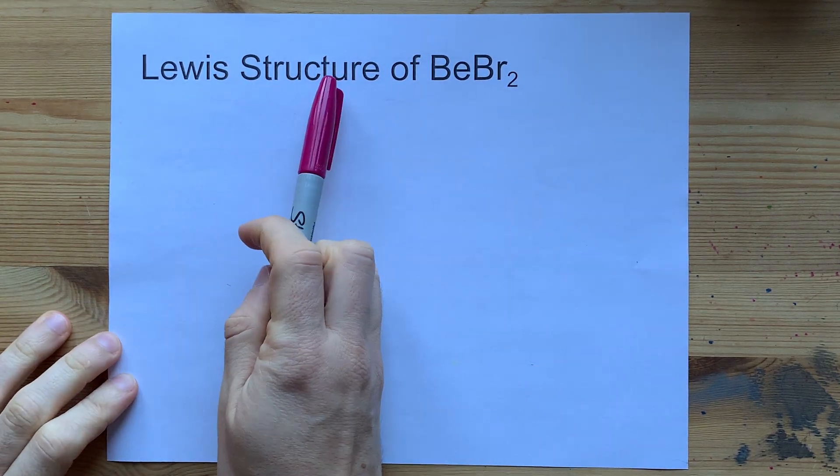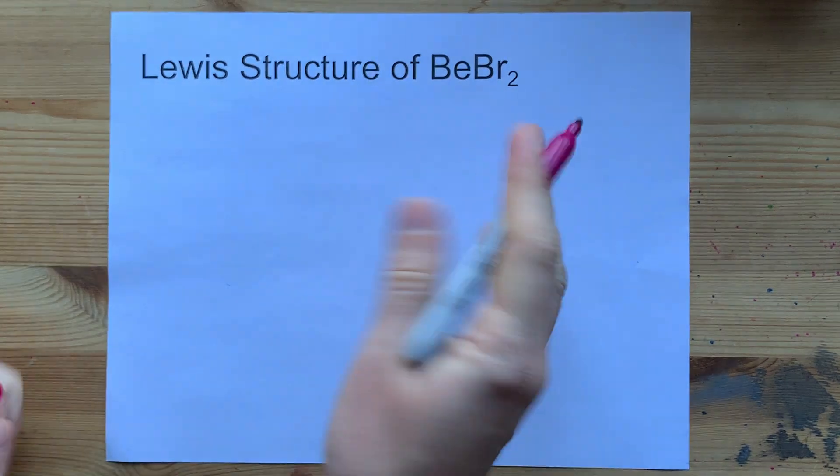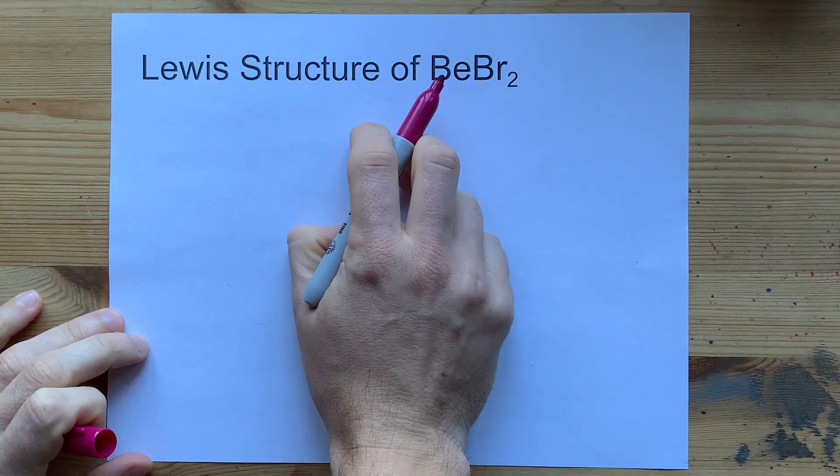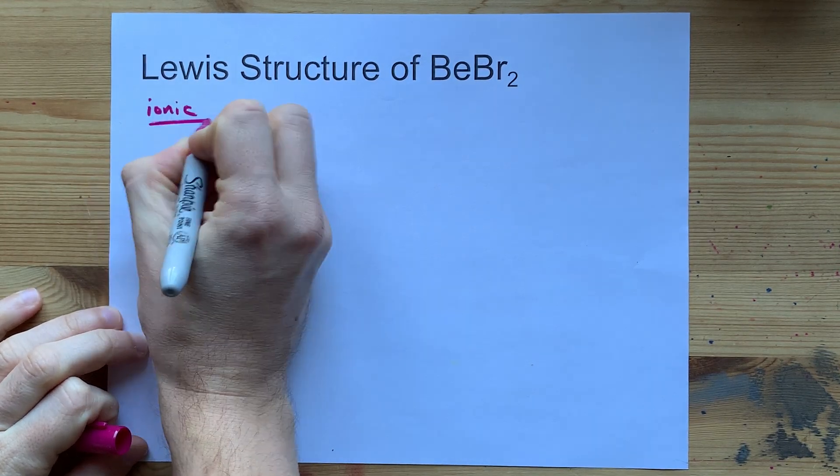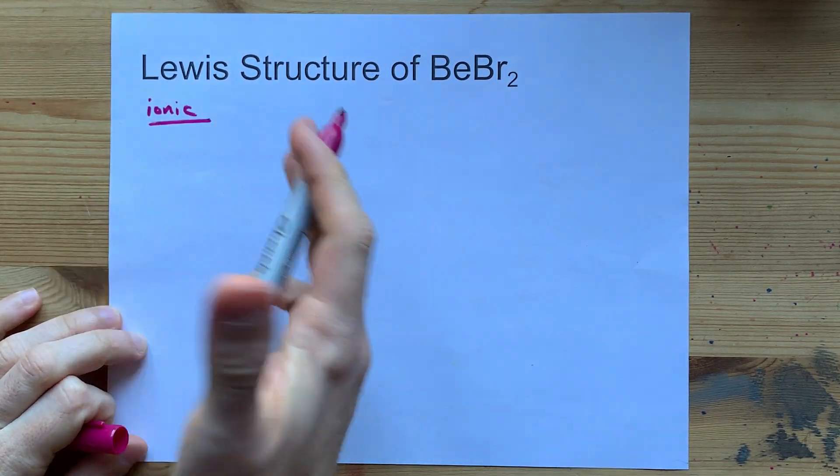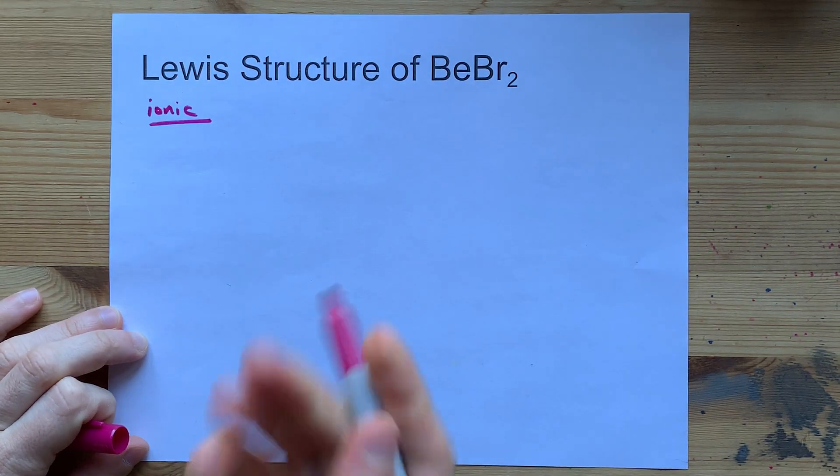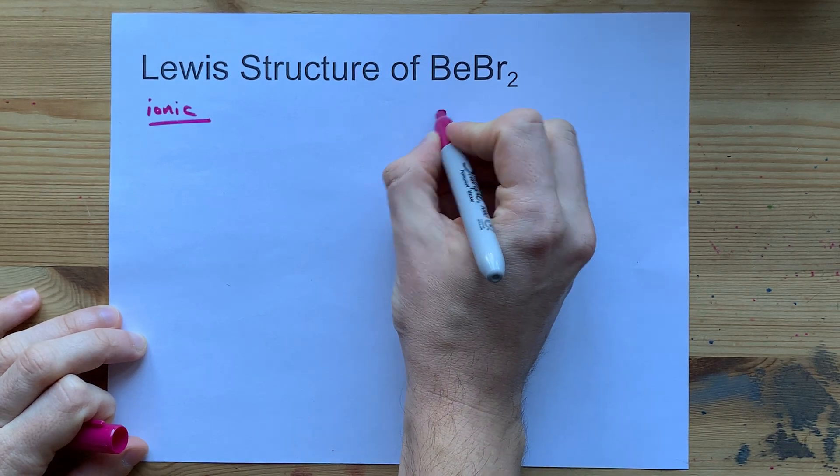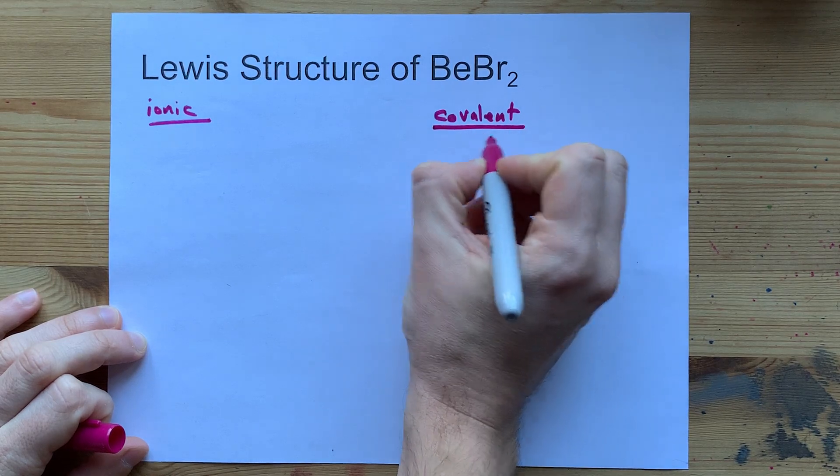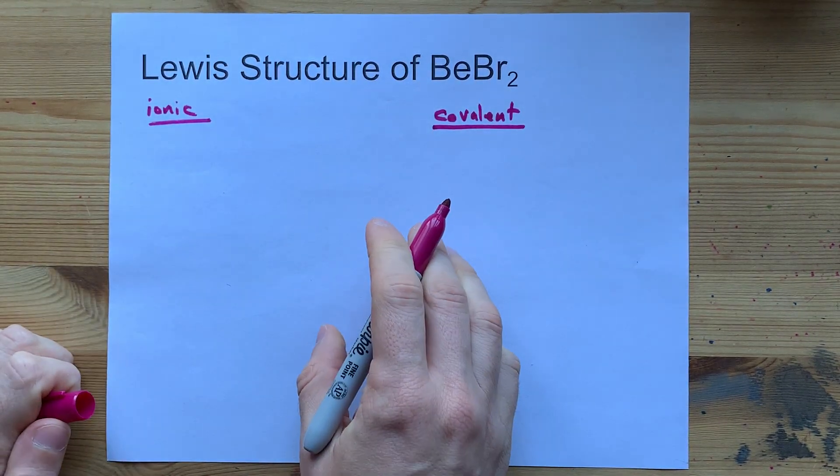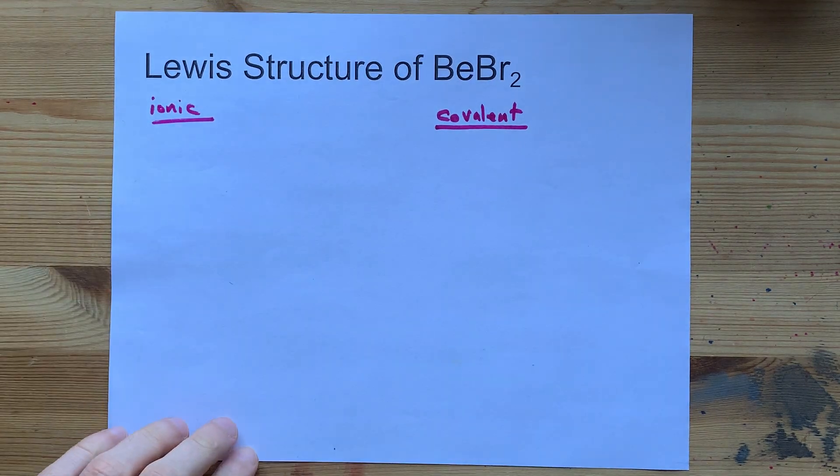Are you being asked for the Lewis structure of beryllium bromide, BeBr2? Well, it's not exactly a fair question. Beryllium is a metal and bromine is a non-metal, so you probably think that the compound is ionic, with a transfer of electrons from metal to non-metal, which makes ions. But beryllium bromide is actually a covalent compound that shares electrons between the beryllium and bromine. I'm going to draw this both ways, and then you can decide which one you think your teacher wants.